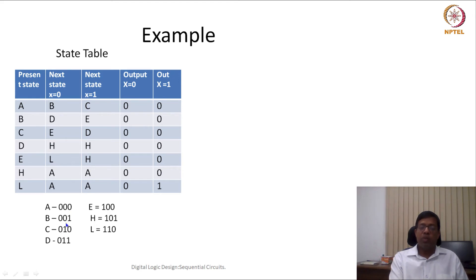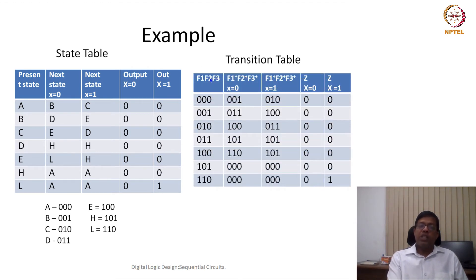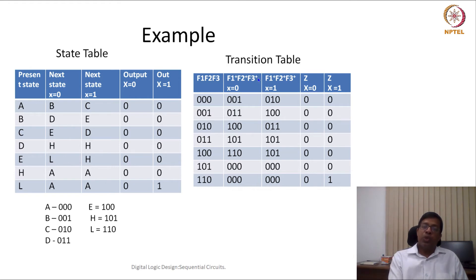Let's say we simply assign sequentially: A gets 0 (000), then 1 (001), 2 (010), 3 (011), 4 (100), 5 (101), and 6 (110). These binary numbers are then substituted into the state table to produce a transition table. Since we require three bits to store these states, we require three flip-flops — F1, F2, and F3 — representing the present state, with F1+, F2+, F3+ representing the next state. We then replace A with 000, B with 001, C with 010, and so on.